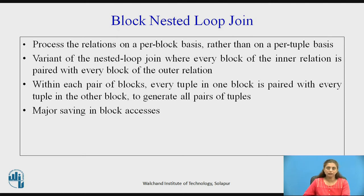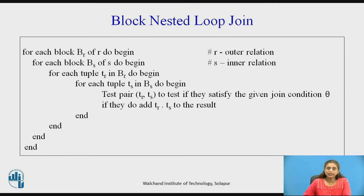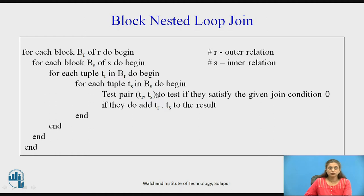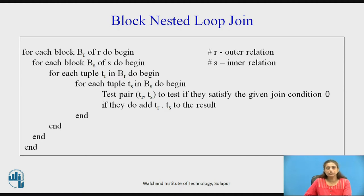This will save major block accesses. In nested loop join, we read a tuple of outer relation R and compared it with all the tuples of inner relation S. Now the variation here is that we bring the next block of relation R and relation S to memory sequentially. Every tuple from block BR is compared with every tuple in block BS. Once the comparison is finished, the next block of relation S will be read, and the tuples from the same block of R will be compared with the new tuples of relation S. In this manner, all the tuples of block BR will be compared with all the tuples of relation S.